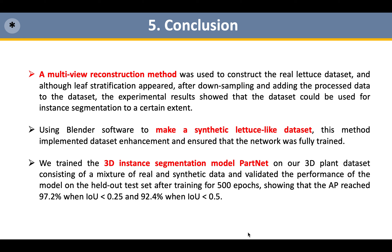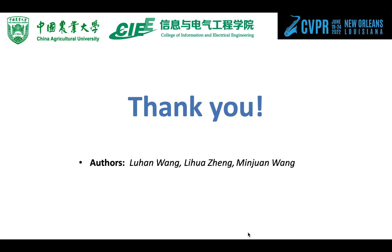Our conclusion was divided into three points. Firstly, a multi-view reconstruction method was used to construct the real lettuce dataset, and although leaf stratification appeared, after downsampling and adding the processed data to the dataset, the experimental results showed that the dataset could be used for instance segmentation to a certain extent. Secondly, using Blender software to make a synthetic lettuce dataset implemented data augmentation and ensured that the network was fully trained. Finally, we trained the 3D instance segmentation network PARNet on our 3D plant dataset consisting of a mixture of real and synthetic data, and validated model performance on the held-out test set after 500 training epochs, showing that the average precision reached 97.2% at IOU 0.25 and 92.4% at IOU 0.5. Thank you for watching our video.